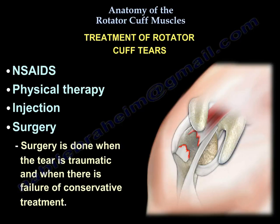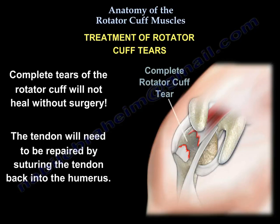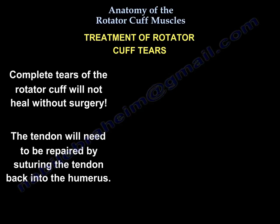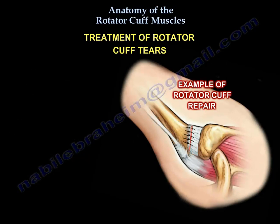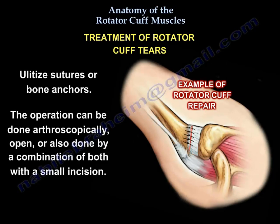A complete cuff tear will not heal without surgery, so we suture the tendon back into its insertion in the humerus. We utilize sutures or bone anchors, and the operation can be done arthroscopically, open, or by a combination with a mini incision.